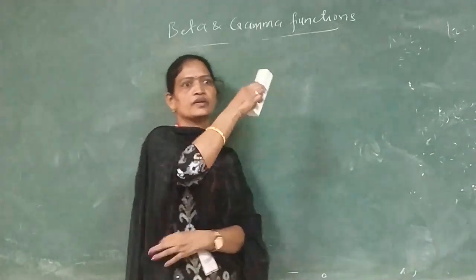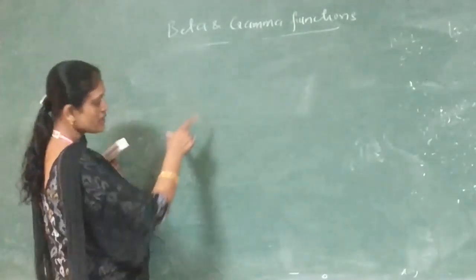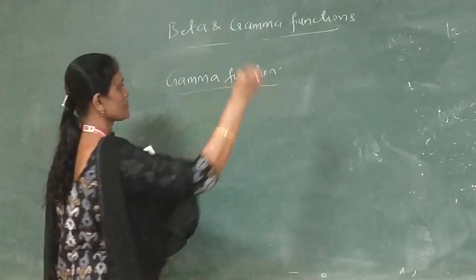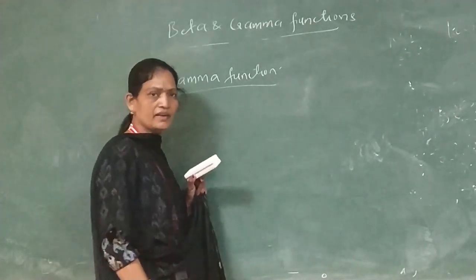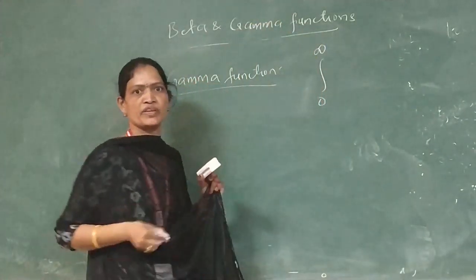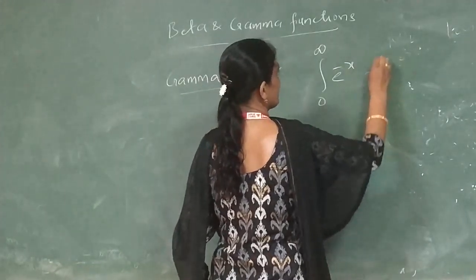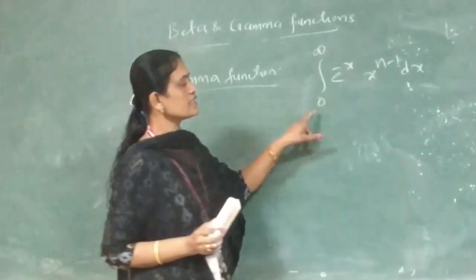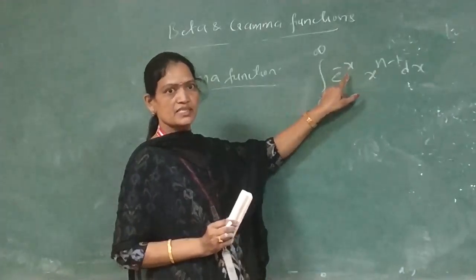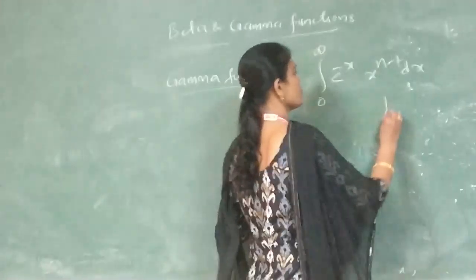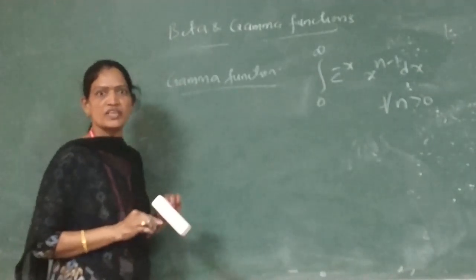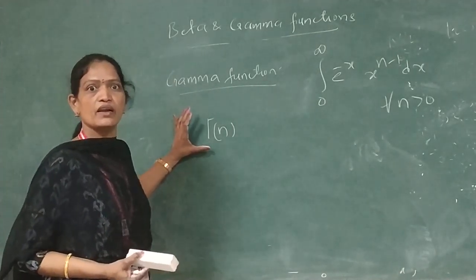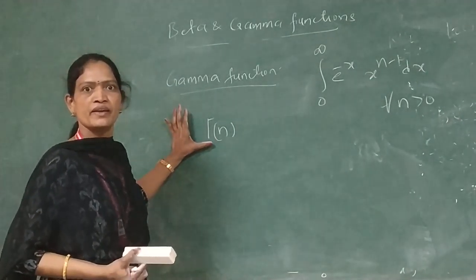Next, the gamma function definition. Beta and gamma are related special functions. The gamma function is defined for non-negative integers n as the definite integral from 0 to infinity of e to the power of minus x into x to the power of n minus 1 dx, for all n greater than 0. Gamma function is also called the Eulerian integral of the second kind, while beta function is called the Eulerian integral of the first kind.